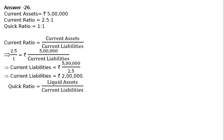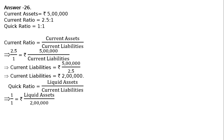The next one is quick ratio: liquid assets upon current liabilities. That implies 1 upon 1 = liquid assets upon Rs. 2 lakhs. Therefore, liquid assets = Rs. 2 lakhs.